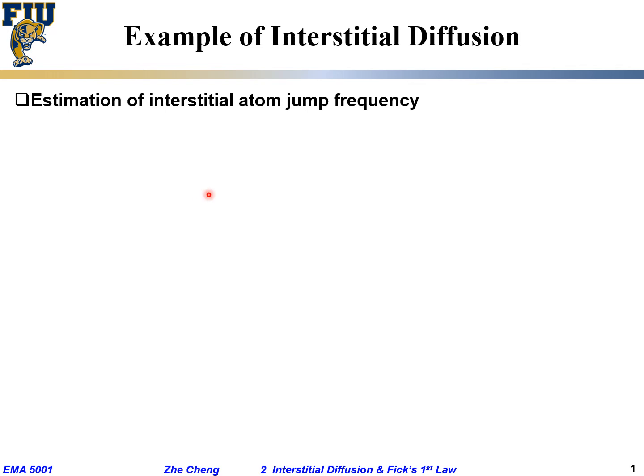Now let's look at a practical interstitial diffusion example. We are looking at steel carbon diffusion within iron, and we want you to estimate the so-called interstitial atom jumping frequency.